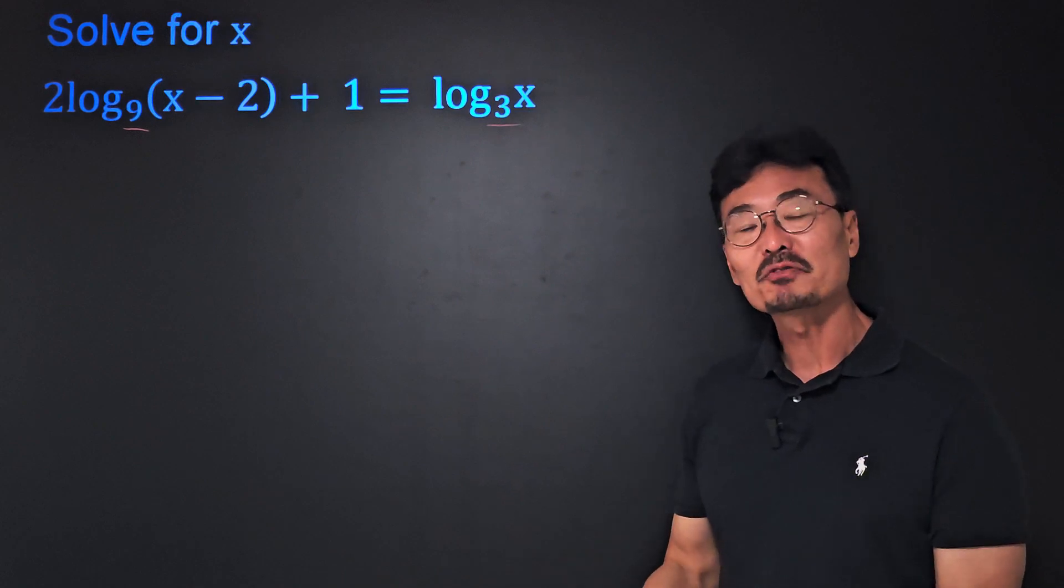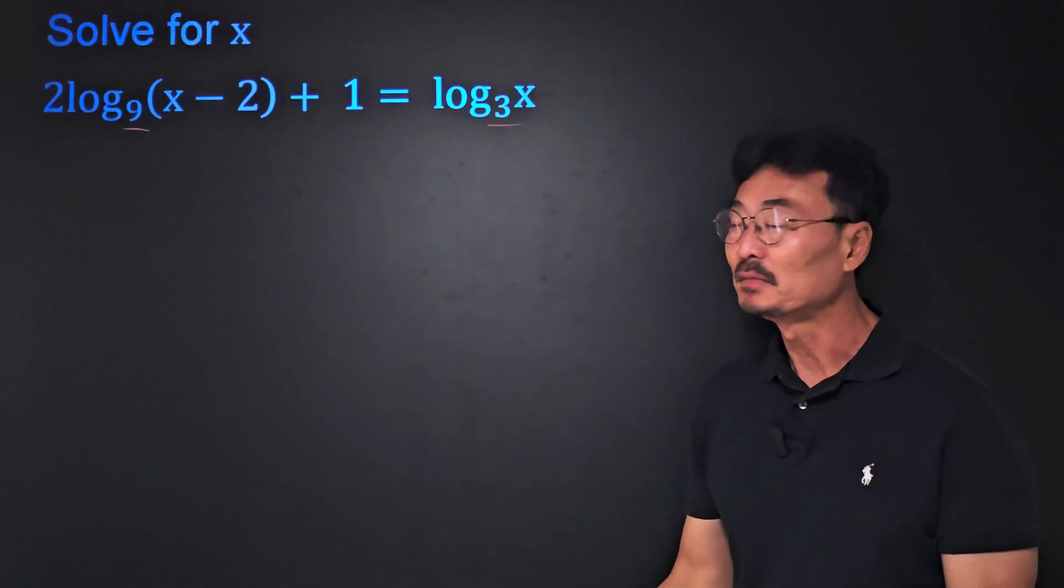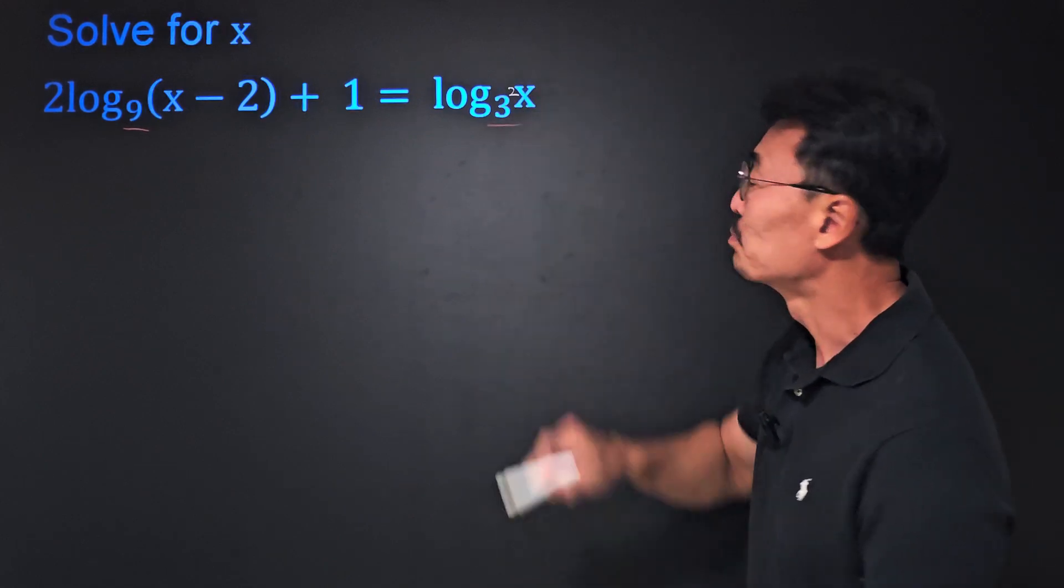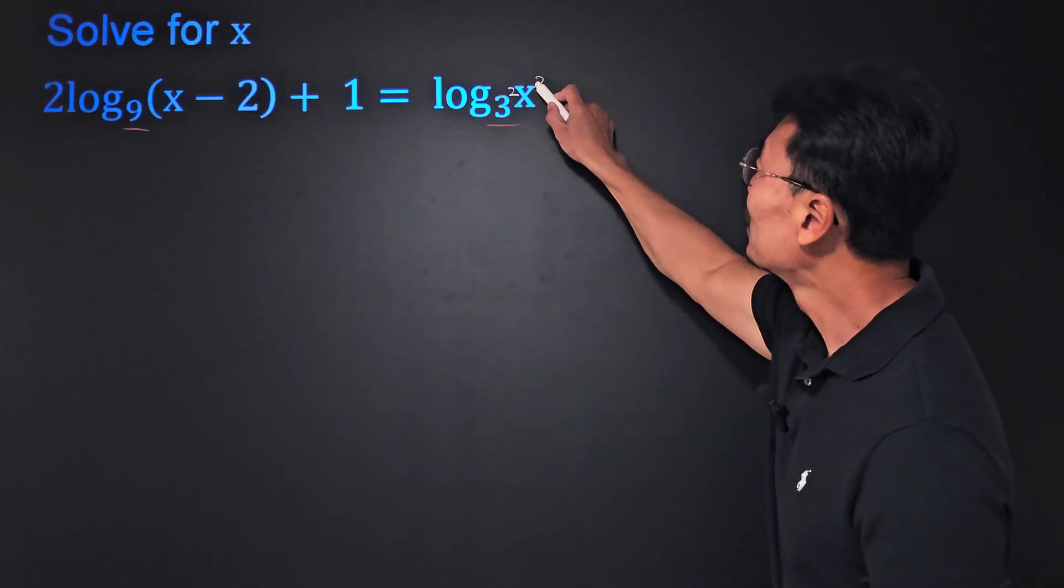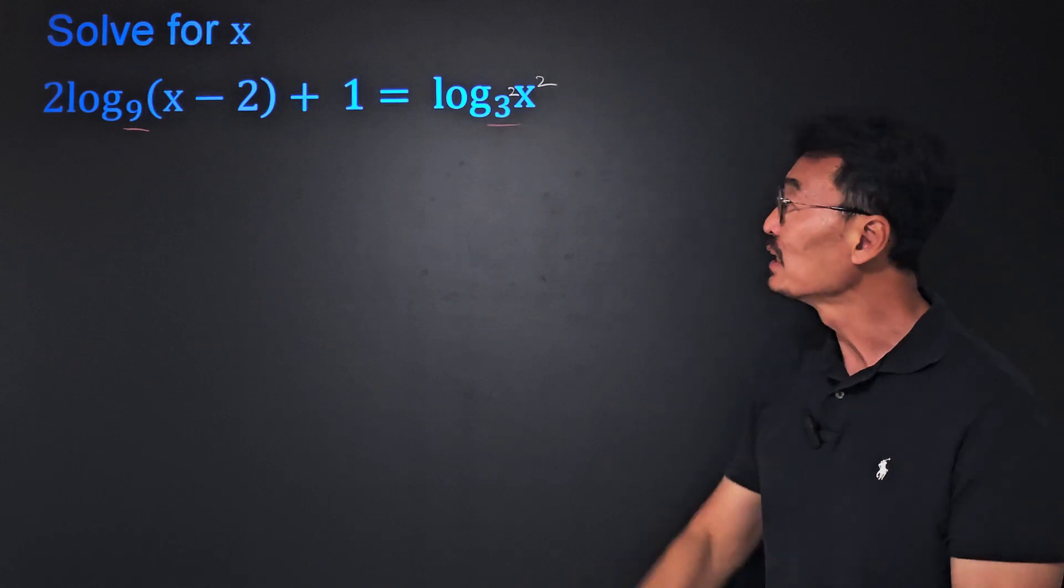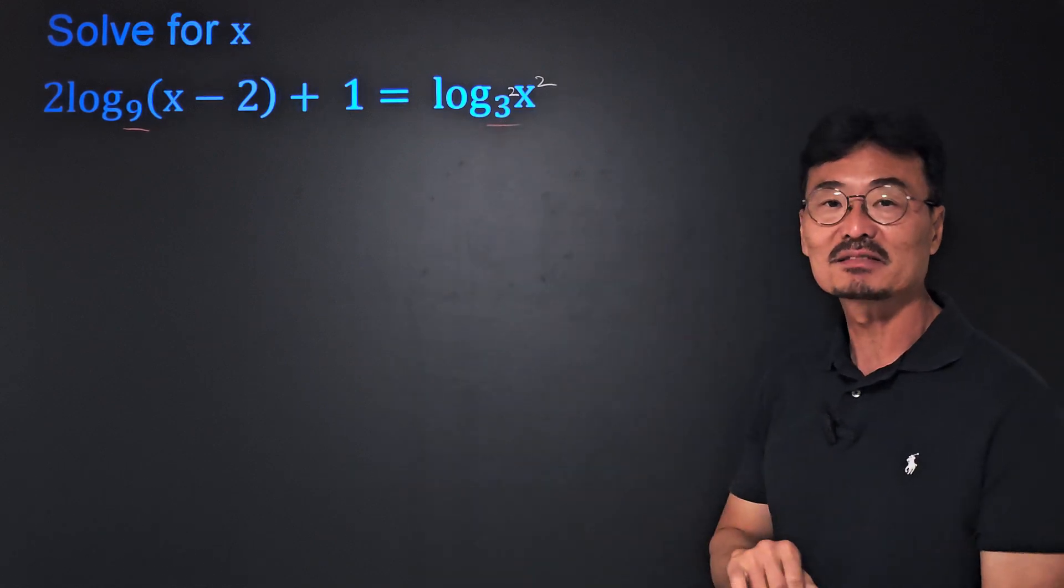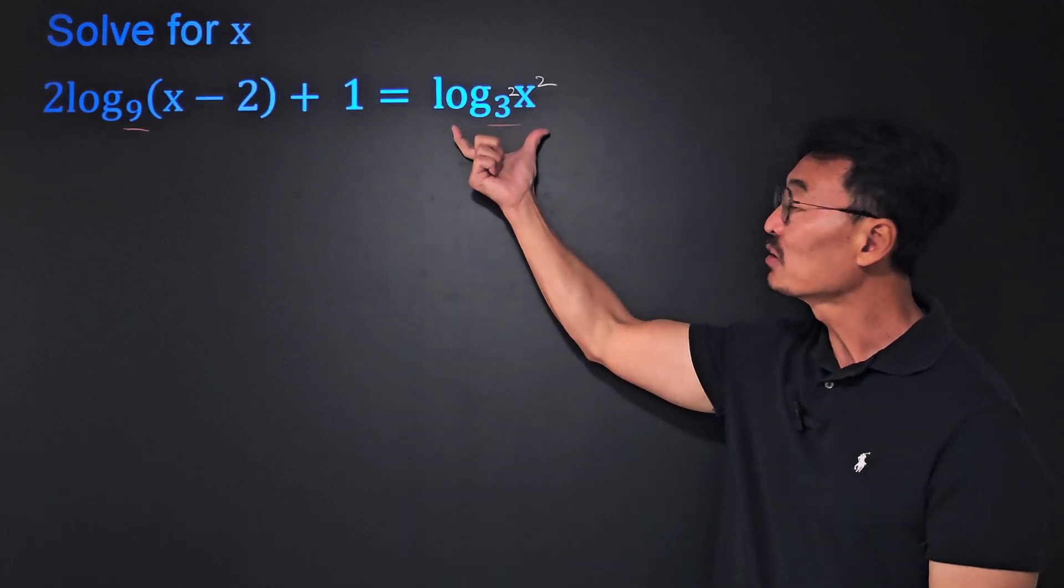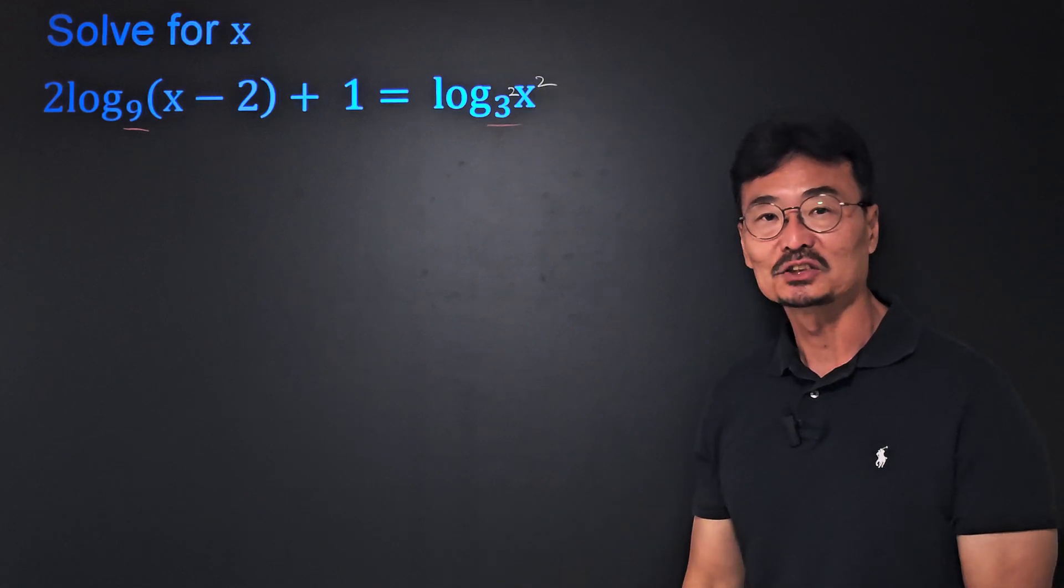Here's what I'm going to do: I'm going to square this base 3 and I'm going to square this argument x as well. There's a rule that says that if I square the base and if I go ahead and square the argument as well, the log expression does not change.